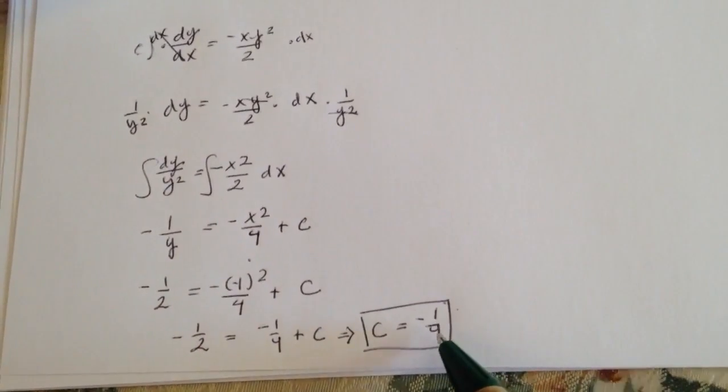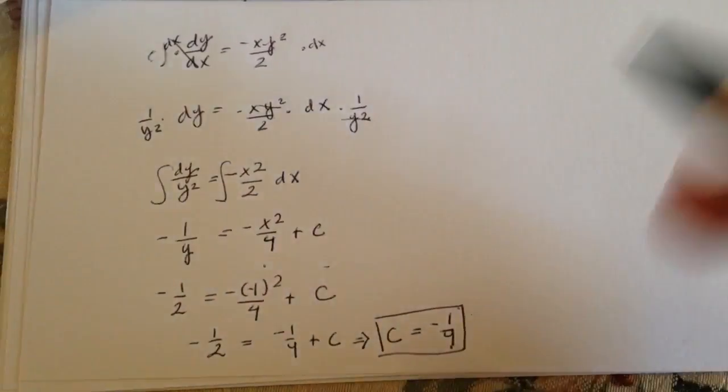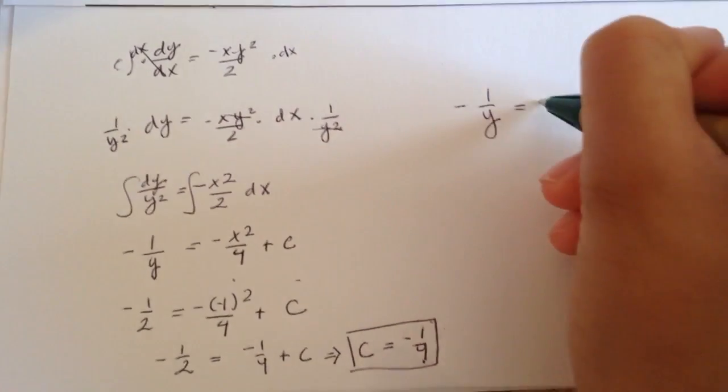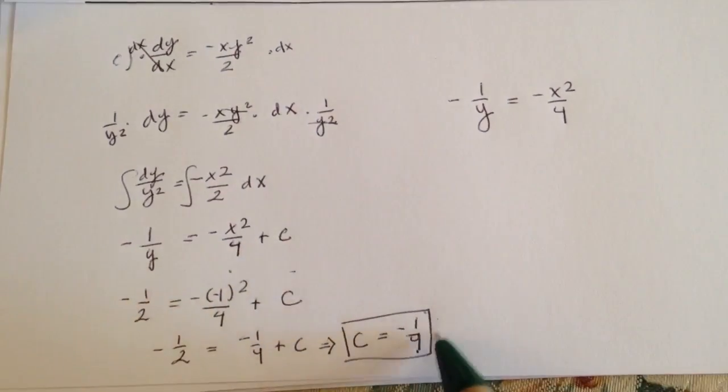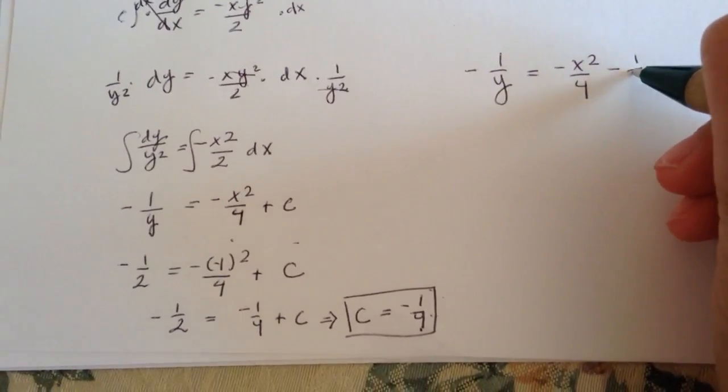After you get your answer, you're going to solve for y. You first use this equation. So it's negative 1 over y. And since you already have your c, you just plug it in. 1 over 4.